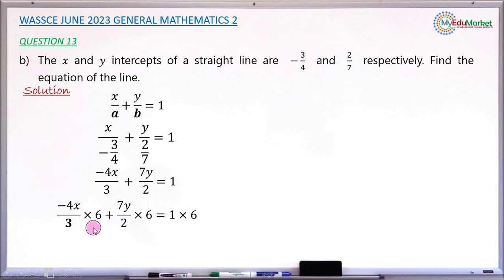So doing the multiplication will now give the answer minus 8x. Minus 4x divided by 3 times 6 gives you minus 8x. Then 7y over 2 multiplied by 6 gives you 21y, and 1 times 6 gives you 6 here.